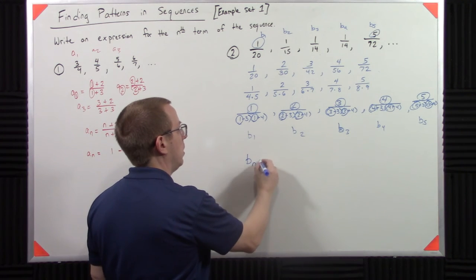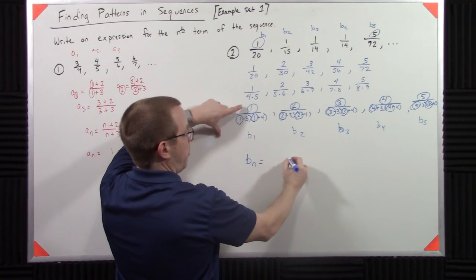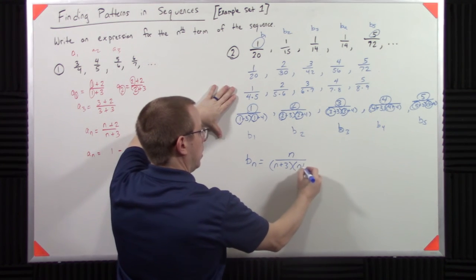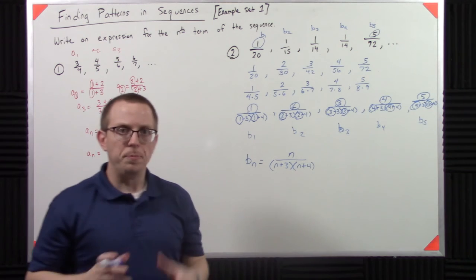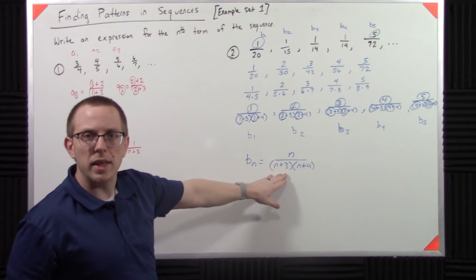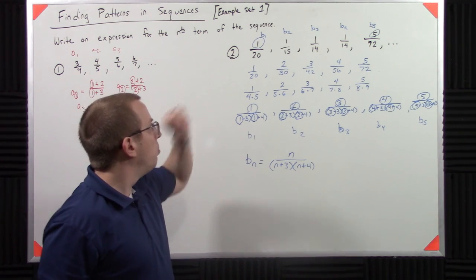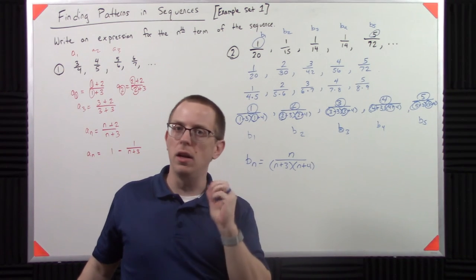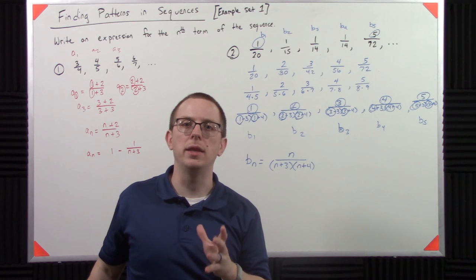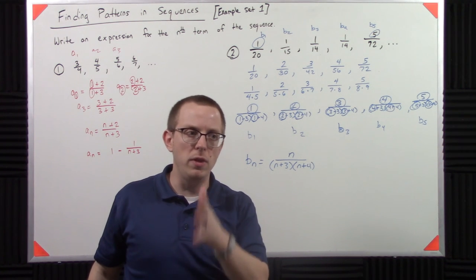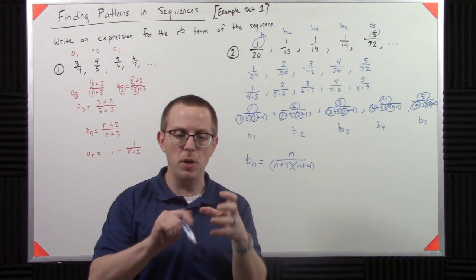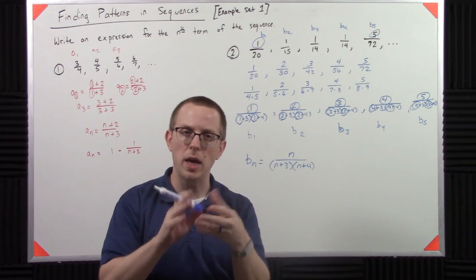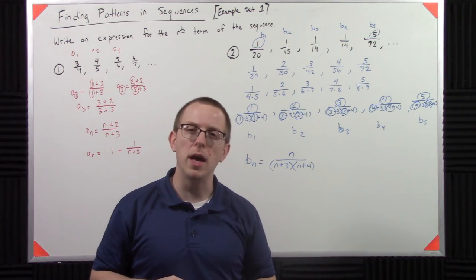So, I could say that b sub n is, by that pattern, is n over n plus 3, n plus 4. And this is not too bad. This is actually pretty easy to see. But when it's in this form, that is nasty. And the idea is that, in the real world, you're going to see stuff like that. It's going to show up in these weird patterns. And it's going to kind of be up to you to kind of break it apart and look at it and try to manipulate it in some sort of way to create meaningful connections.